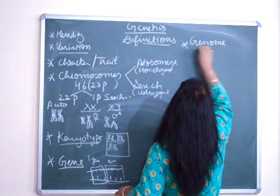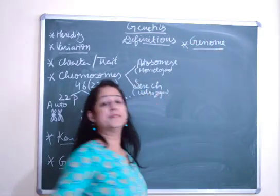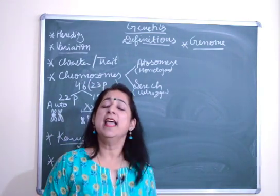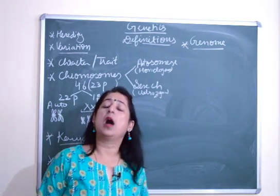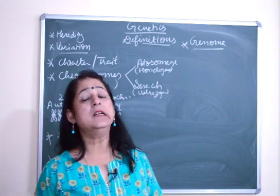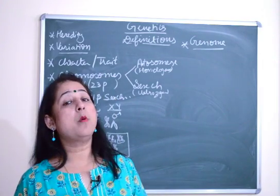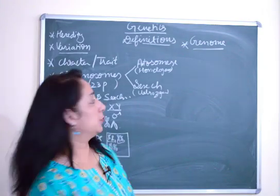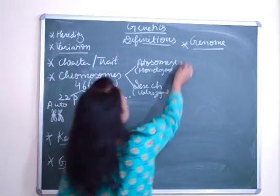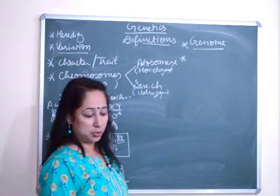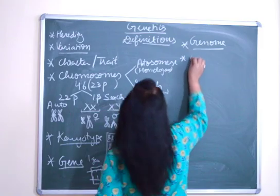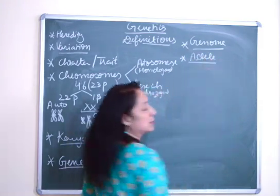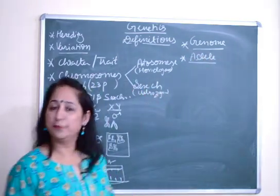Next is genome. Genome is the full set of genetic makeup of an individual — from head to toe, how all the genes are arranged in the body. The whole gene pool of an individual is their genome.